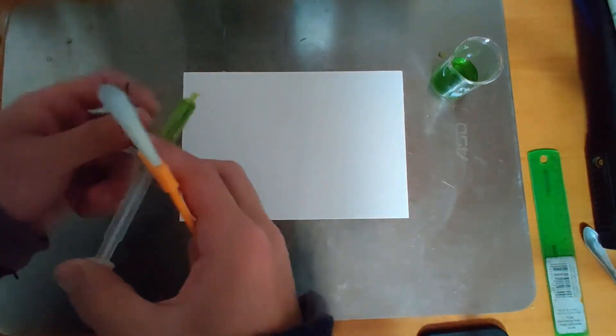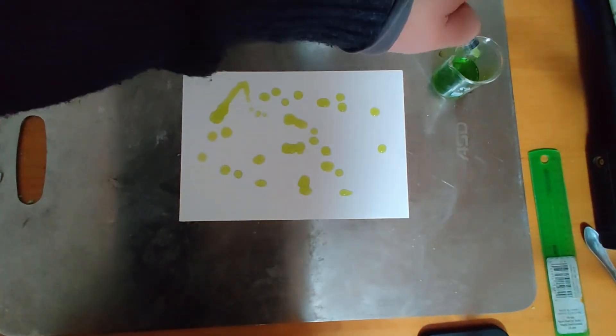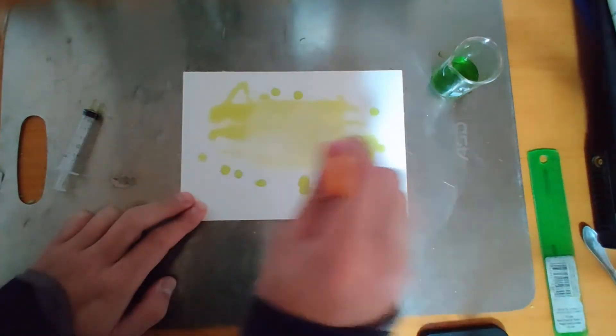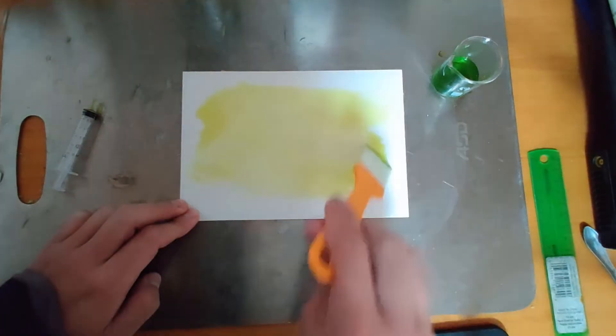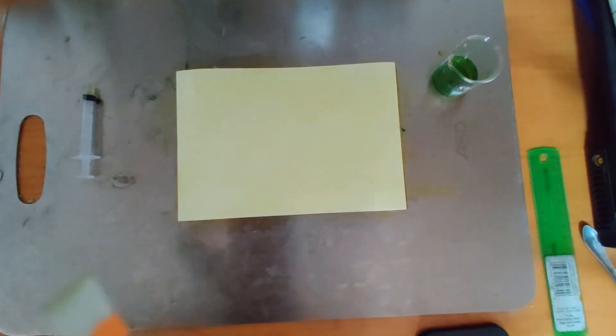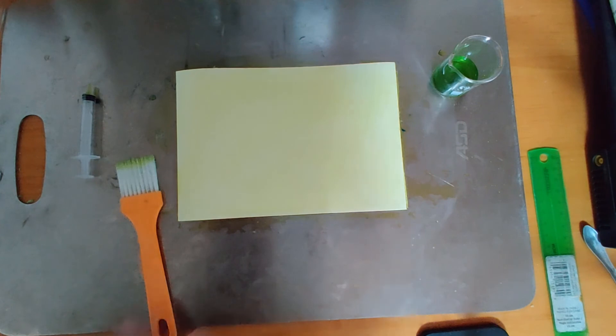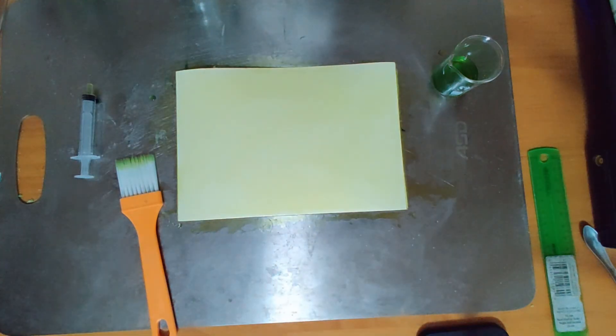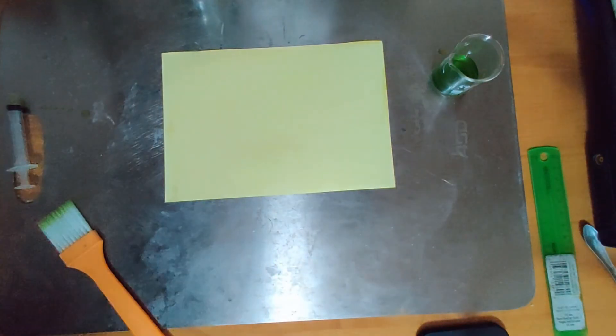I splashed the cyanotype solution on a piece of paper sheet by a syringe and used a brush to spread the solution as evenly as possible. Then I used a hair dryer to quickly dry it. For now, all the materials are ready and we will make the blueprint on this paper sheet.